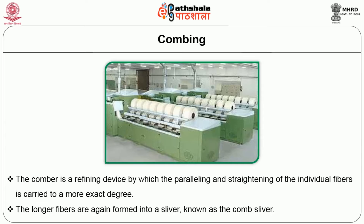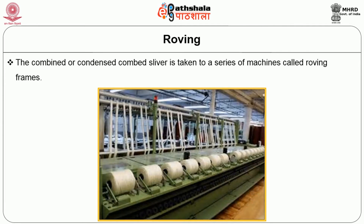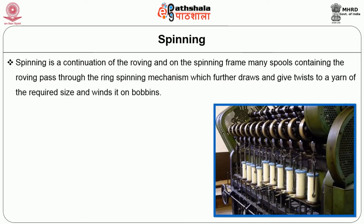The longer fibers are again formed into a sliver known as comb sliver. In the drawing operation, further blending is done by working together several slivers and drawing them out in the drawing frame without twisting, but reducing the several slivers to a single one. Next is roving — the combined or condensed comb sliver is taken to a series of machines called roving frames. Last process is spinning, which further draws and gives twist to a yarn of the required size and winds it on bobbins.